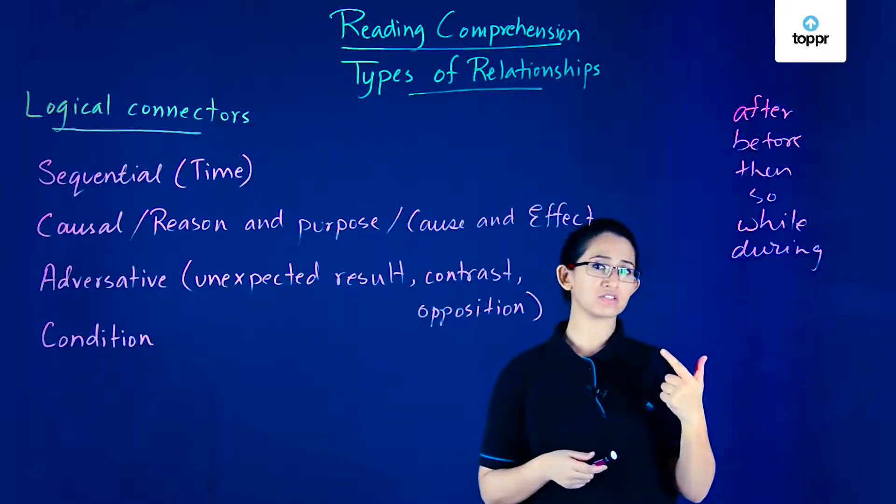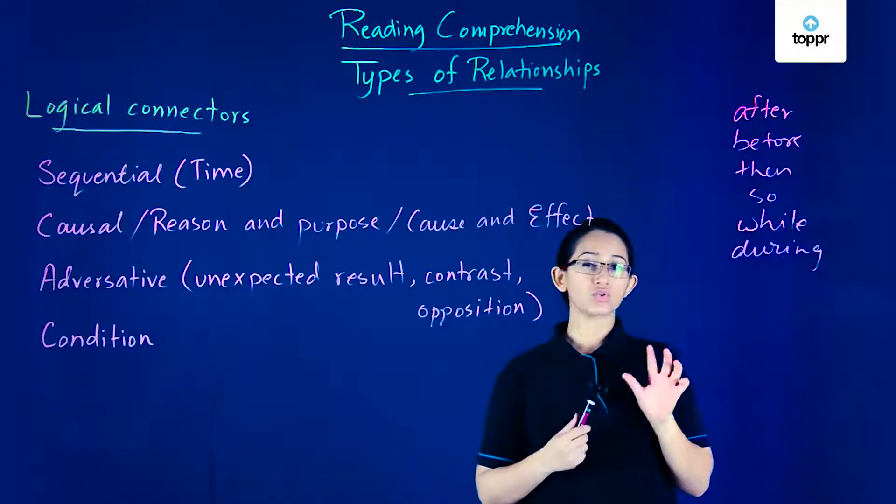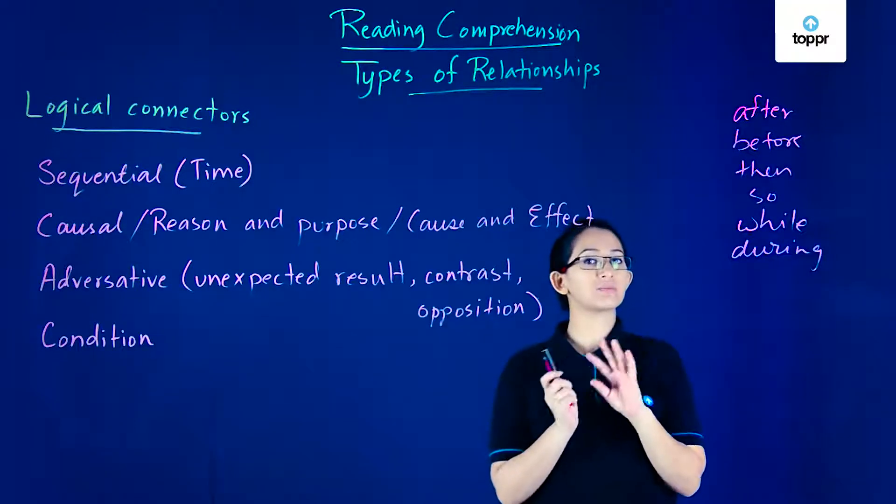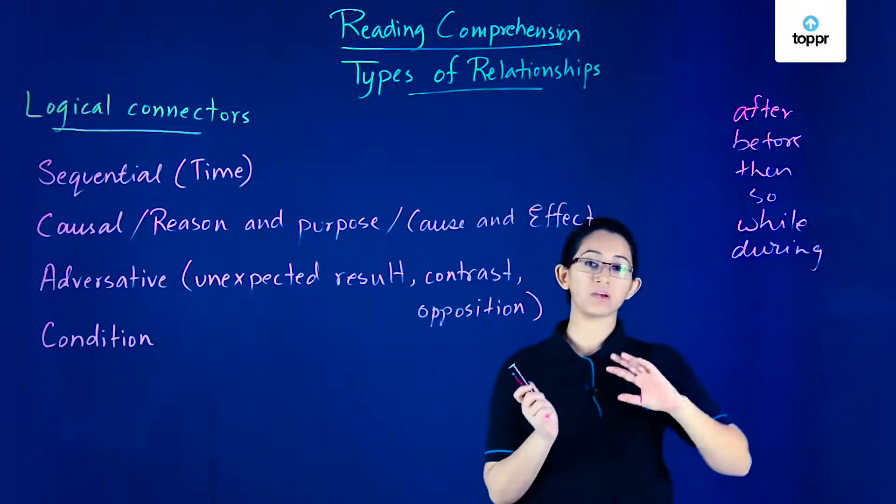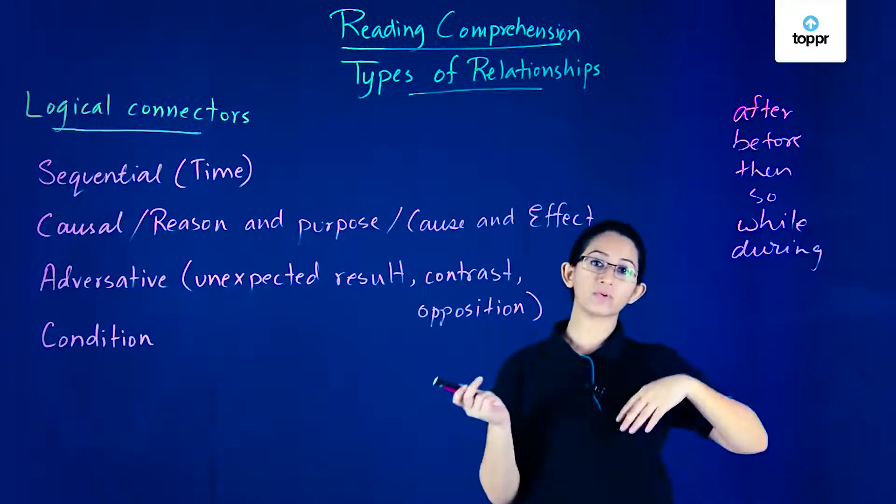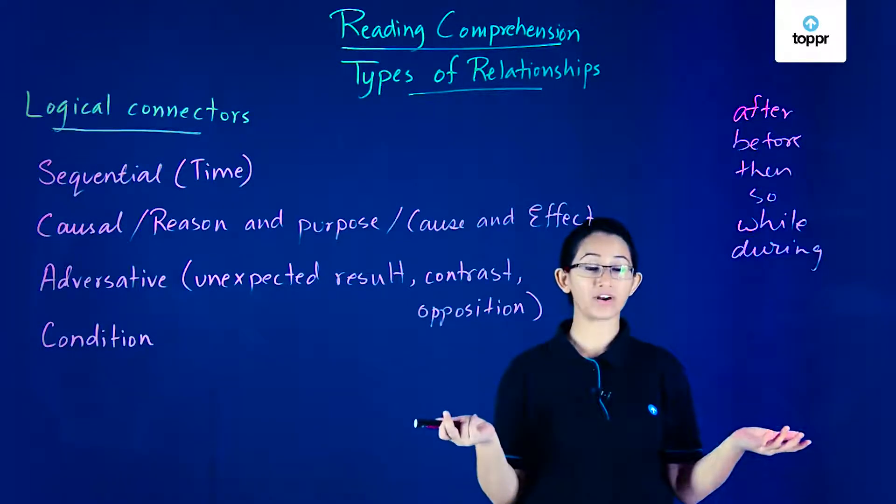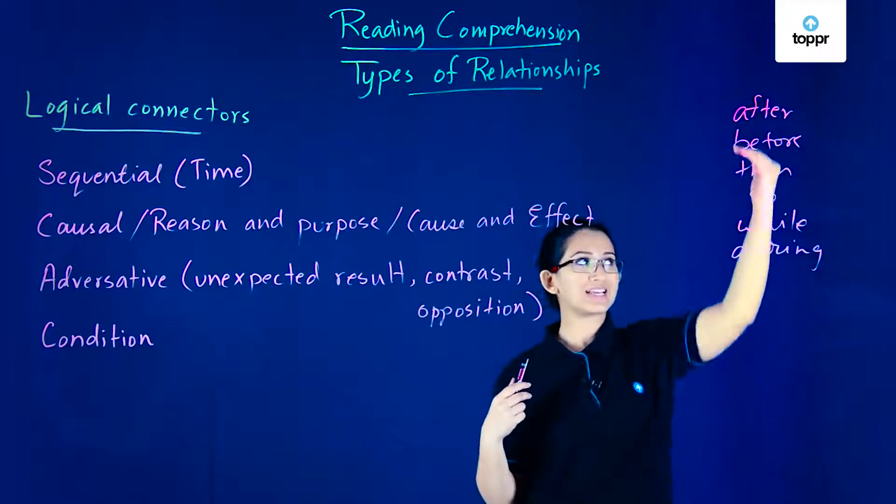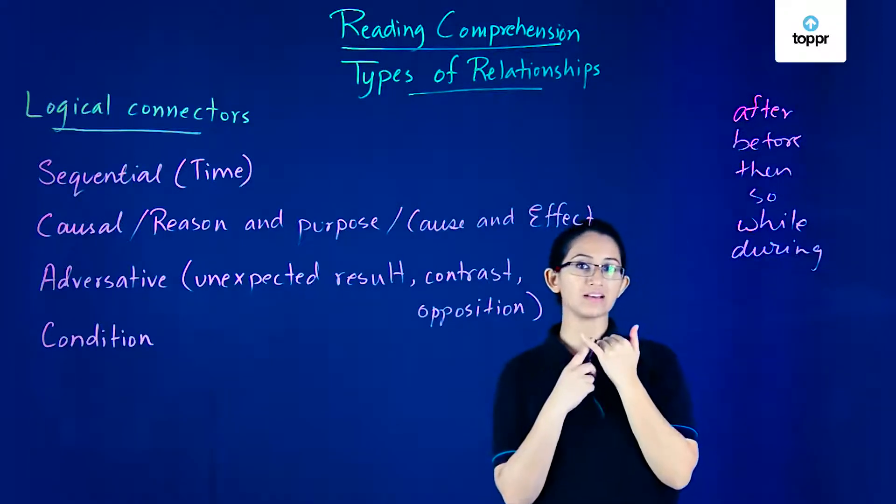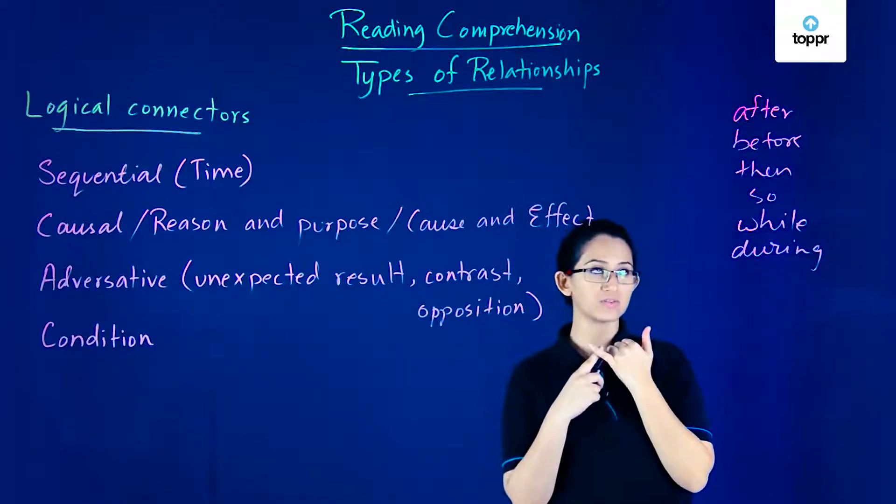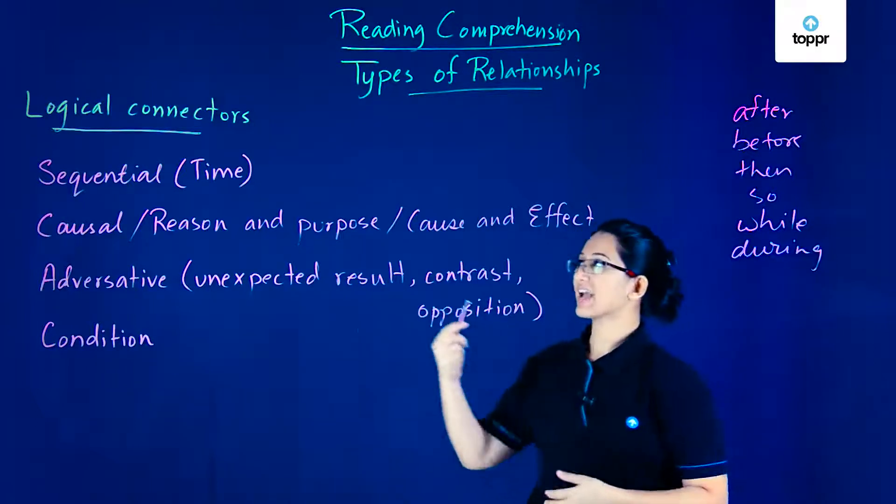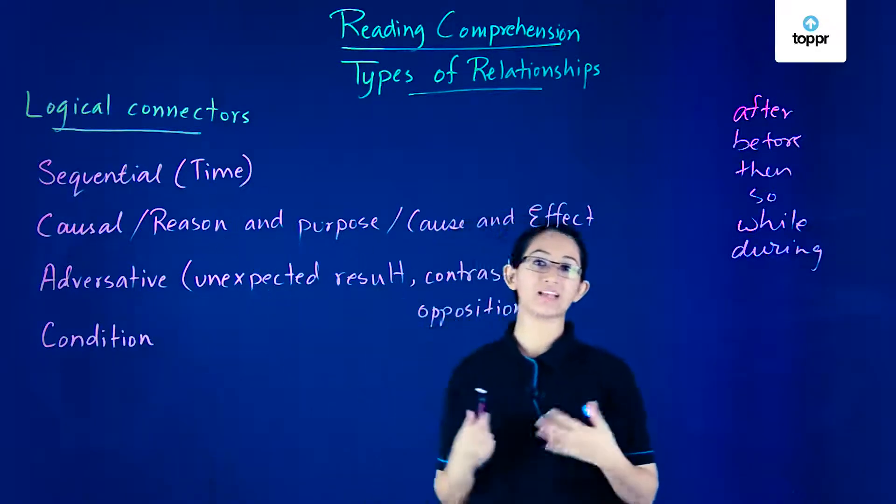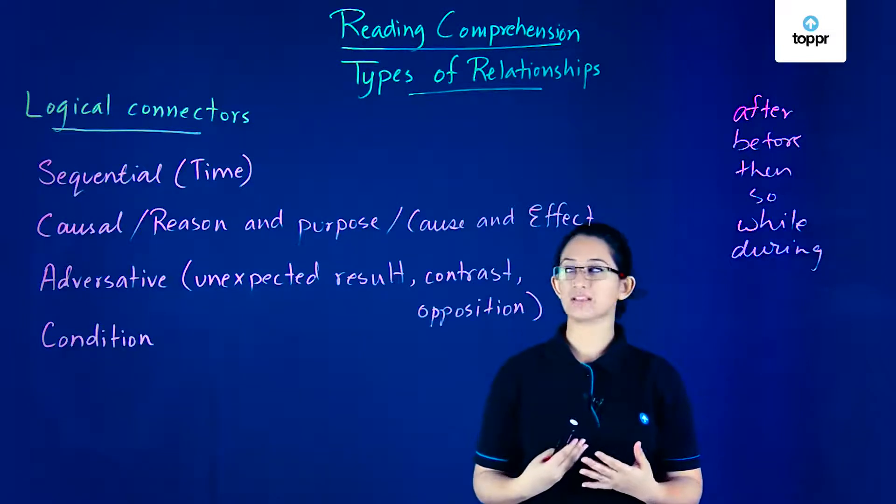Conjunctions and prepositions can usually be used to help us figure out what the relationship is between two parts of a sentence or between two sentences or even two paragraphs. What we do is take a look at those prepositions and look out for those conjunctions, and if they relate to time, then we can say they have a sequential or time-related connection between them.